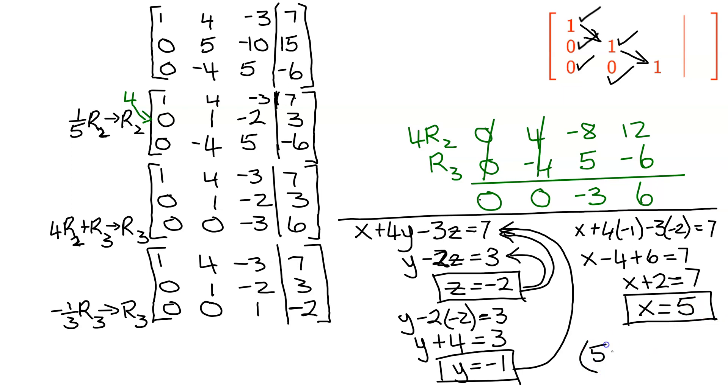So I've solved my system, and if I want to write it as an ordered triple, x comes first, 5, negative 1 for y is next, and finally z is negative 2. So there's the solution as an ordered triple.